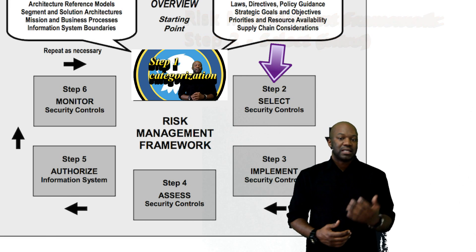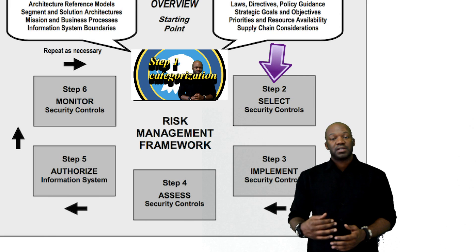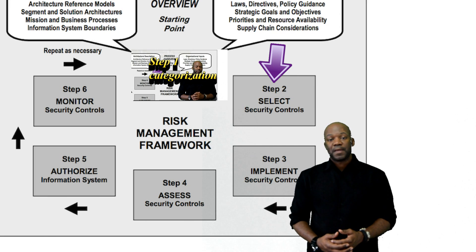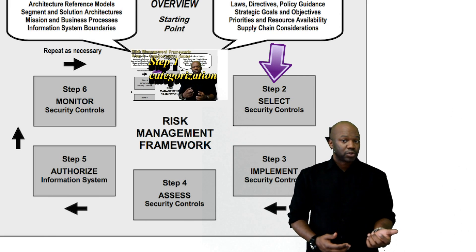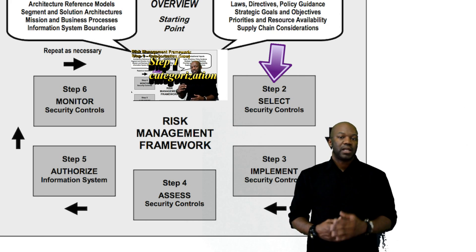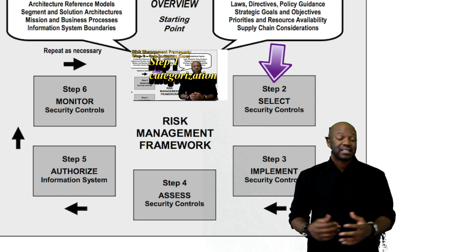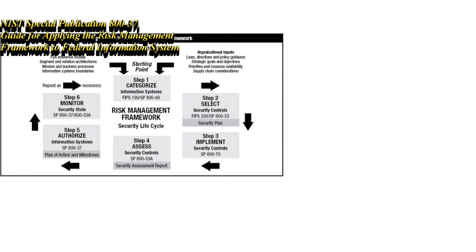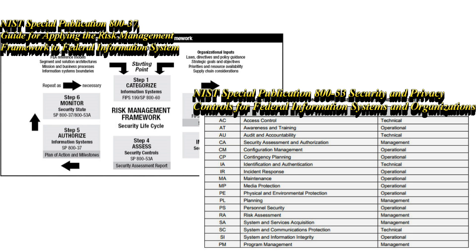The next step after categorization is selecting the controls, and then after this it's implementing the controls, then assessing the controls, authorizing controls, and finally continuous monitoring of the controls. We're going to focus on an intro to selecting the security controls. You can find all the information in NIST Special Publication 800-37, and additional information on all the individual controls in NIST Special Publication 800-53.